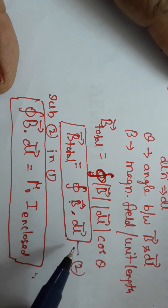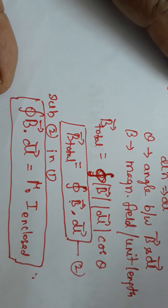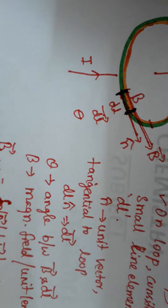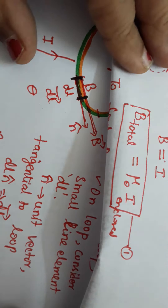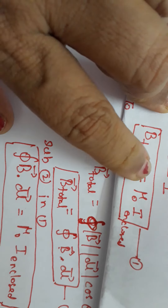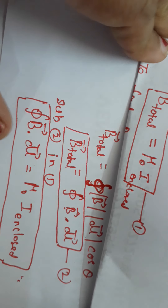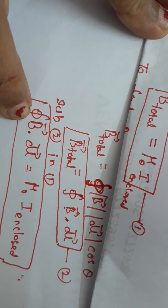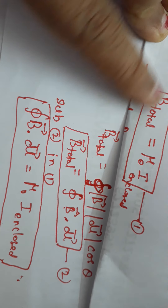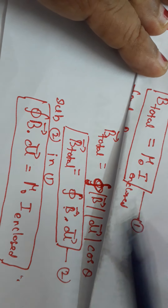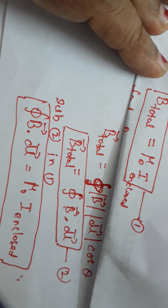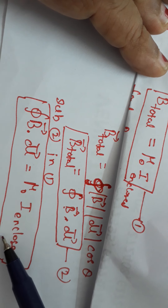Now substitute this B total value from equation 2 into the first equation. The first equation is B total equals μ₀ times I enclosed. Substituting, the closed integral of B vector dot dL equals μ₀ times I enclosed. This is the mathematical expression for Ampere's Circuital Law.